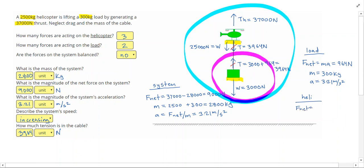For the net force, I can do 37,000 pointed up minus, well pointed downwards, I have 25,000 plus 3964. So I have 28,964 Newtons pointed downwards. If I subtract that from 37,000, I get 8,036 Newtons.